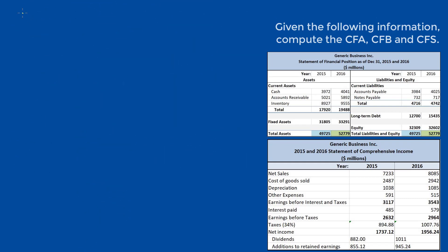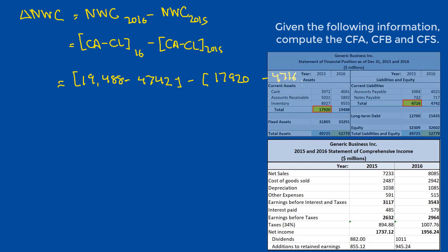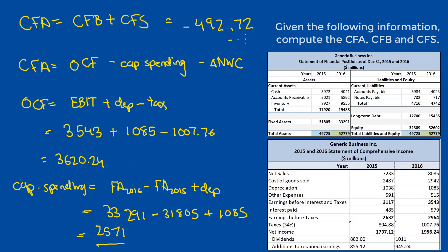Our final amount is changes to net working capital, given by NWC from the current year minus NWC from the previous year, broken down as current assets minus current liabilities from 2016, minus current assets minus current liabilities from 2015: $19,488 minus $4,742 minus $17,920 minus $4,716, giving us $1,542. With these three amounts — $3,620.24 minus $2,571 minus $1,542 — we subtract them out and should get the exact same amount of negative $492.72, confirming our earlier calculation.